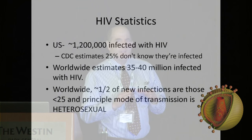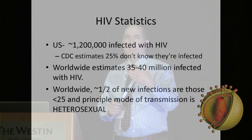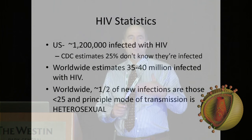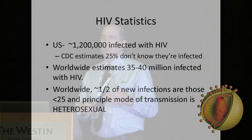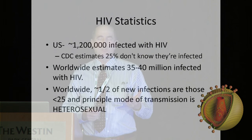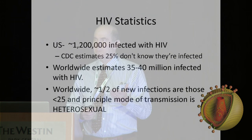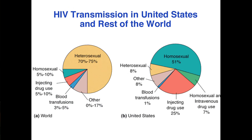A problem in the US with educating people about HIV is the stigma that it's a disease of homosexuals. HIV is actually a sexually transmitted disease that entered the US through the homosexual population. Worldwide, most infections are through heterosexual transmission. In the US, one of the fastest-growing modes of transmission is heterosexual contact, though still about half of US infections are associated with male-to-male sexual transmission.